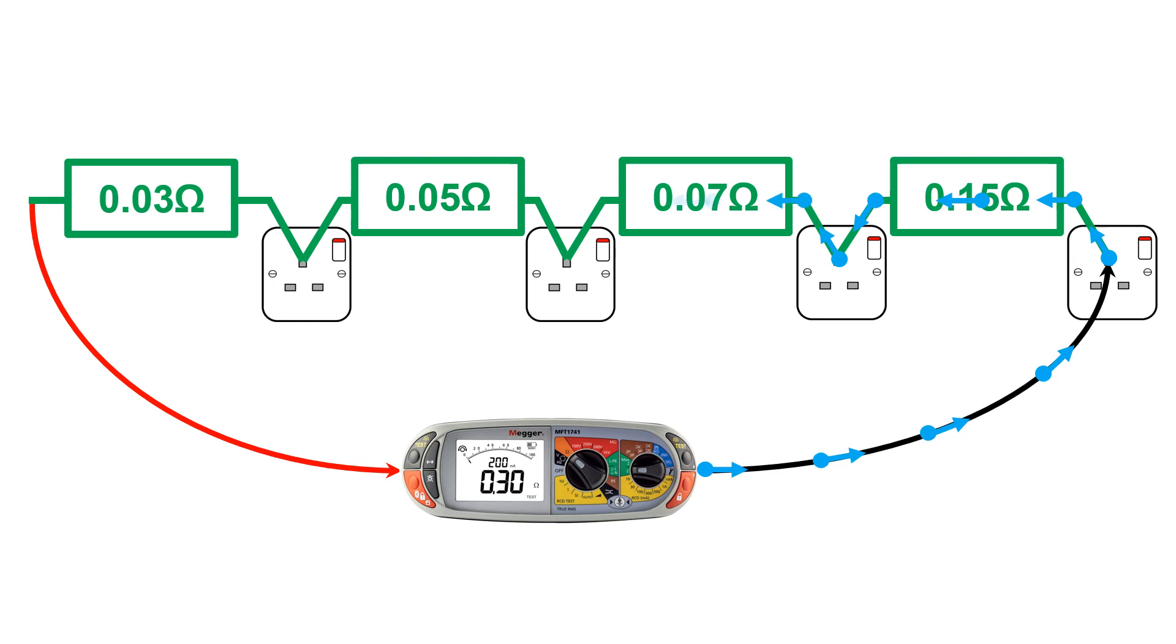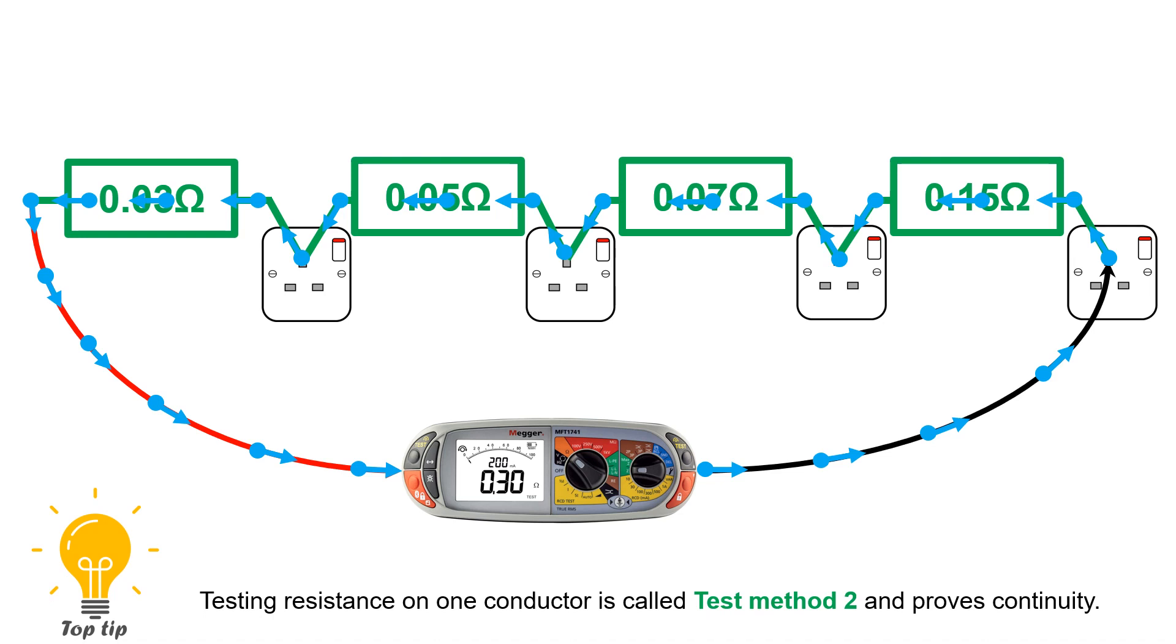those individual resistances would add up to 0.30 ohms. And if you were to test from the start of the circuit to the end of the circuit, then that total resistance would be represented on the low ohm resistance tester as represented here. When you are testing the resistance of one conductor only, we call that test method two. And this test also proves that the circuit is continuous, which is why it is called continuity.